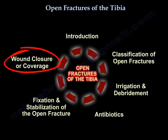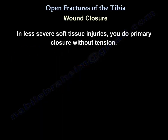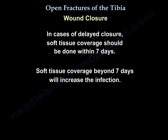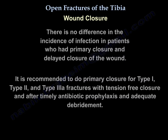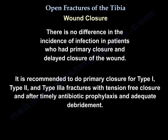Wound closure or coverage: In less severe soft tissue injuries, perform primary closure without tension. In cases of delayed closure, soft tissue coverage should be done within seven days — coverage beyond seven days increases infection risk. There is no difference in infection incidence between primary and delayed wound closure. It is recommended to perform primary closure for Type 1, Type 2, and Type 3A fractures, with tension-free closure following timely antibiotic prophylaxis and adequate debridement.